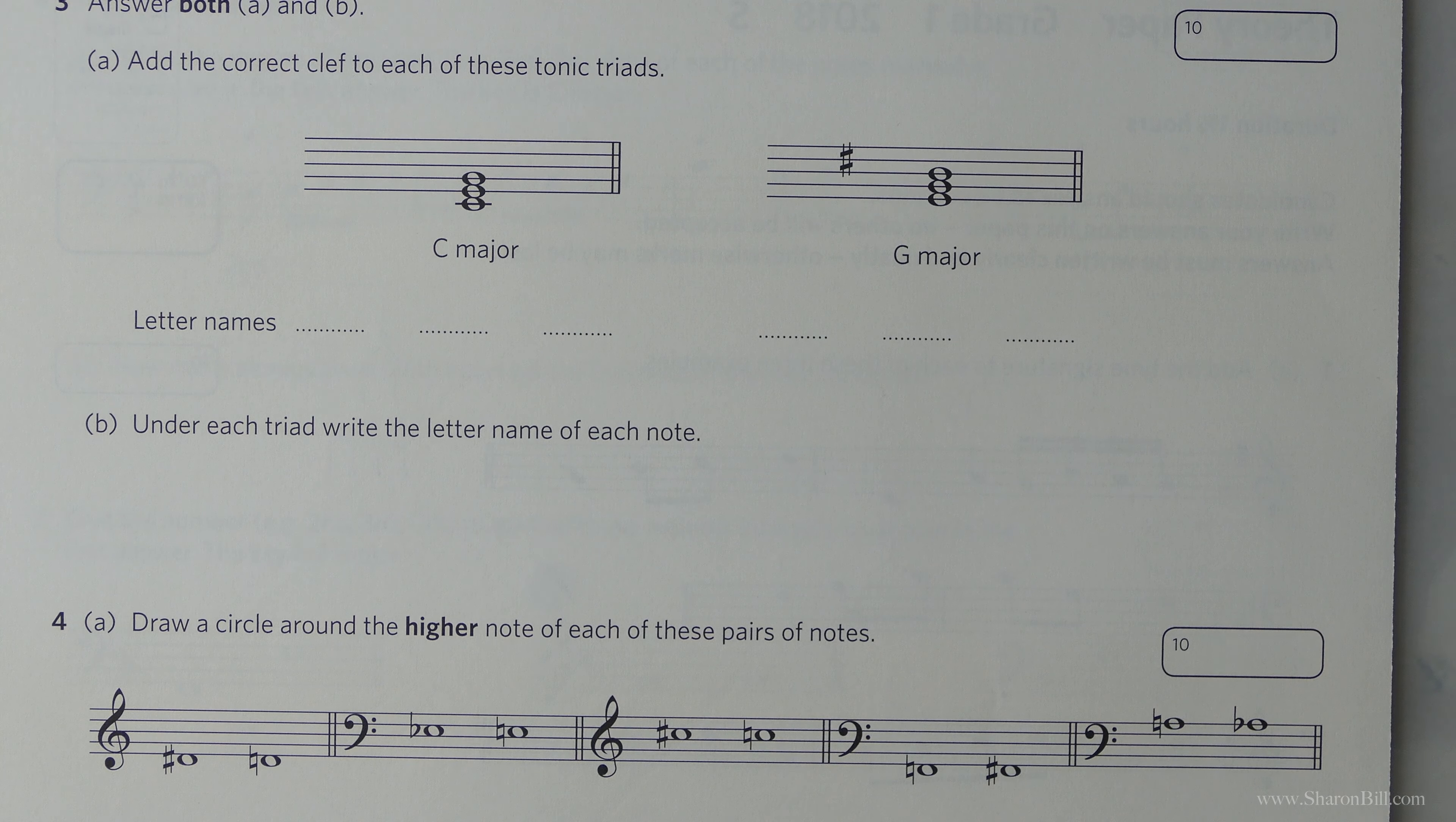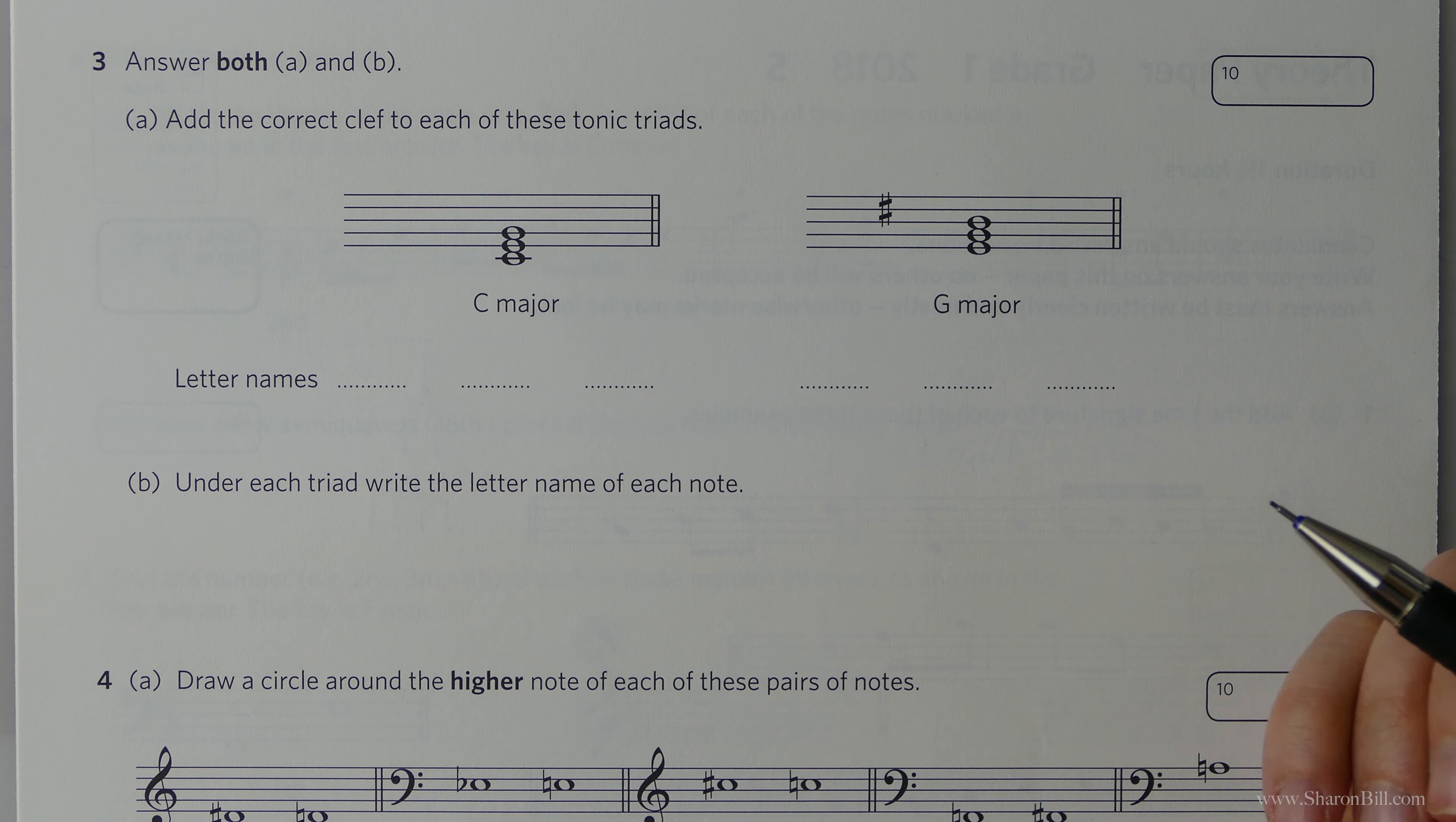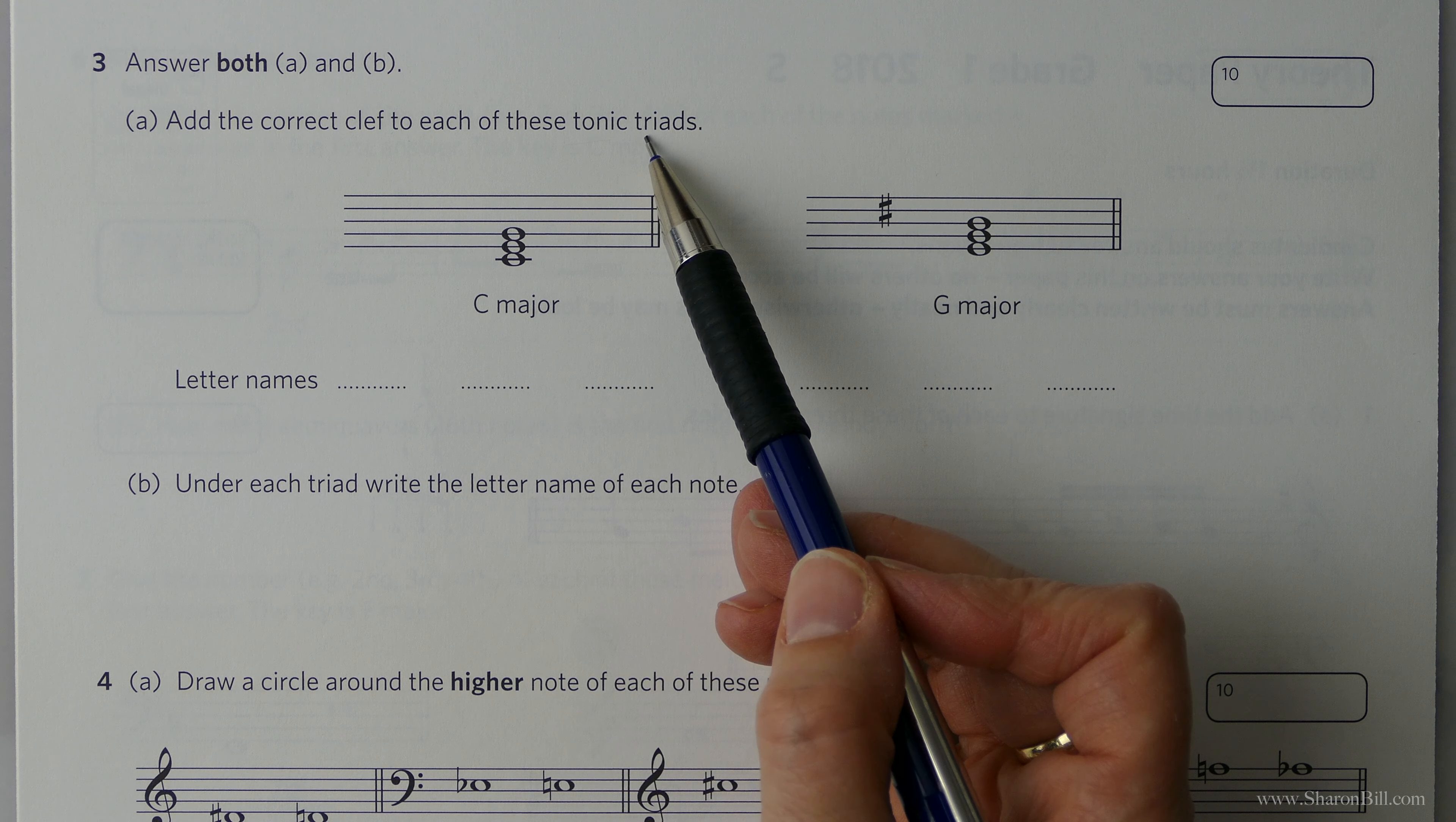So I know I'm repeating myself, but do have a go of this on your own first of all. It really doesn't matter if you go wrong. It's always better to learn by your mistakes. Write in pencil and then you can just rub it out and have another go. So I'm hoping you've had a go of this and now we'll look at this together. So the first part of question three, we're asked to add the correct clef to each of these tonic triads.